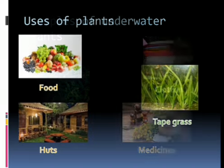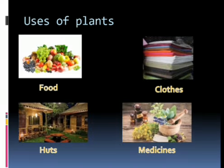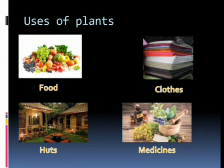We will now discuss uses of plants. Plants are useful for human beings in numerous ways. We get food from plants. Plants are used to make clothes, carpets, and ropes. Stems of bamboo plants are used to make baskets and huts. Some plants are also used to make medicines.